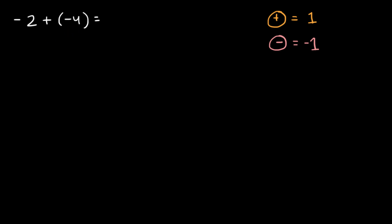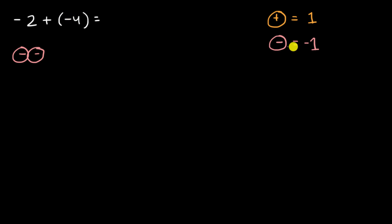So negative two — how can I represent that with integer chips? Well, that's going to be two of these negative integer chips: negative one and negative two. And then negative four is going to be four of these negative integer chips: negative one, negative two, negative three, and negative four.